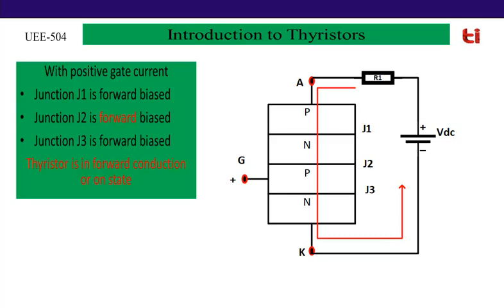Now all three junctions are forward biased — J1 and J3 were already forward biased, and now J2 is also forward biased. All four layers are flooded with carriers. Electrons are attracted by the positive supply of the battery, and current flows in the opposite direction to electron flow. This state is known as the forward conduction state — the thyristor is completely on. So without gate supply J1 and J3 are forward biased but J2 is reverse biased; when positive gate supply is applied, J2 also becomes forward biased and current flows from anode to cathode, bringing the thyristor into conduction.